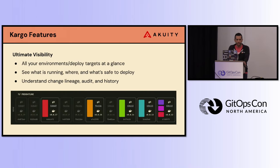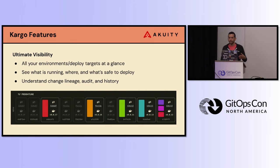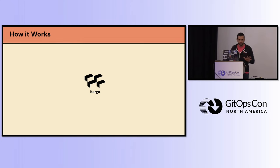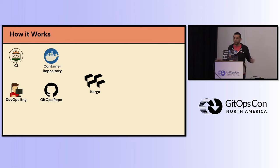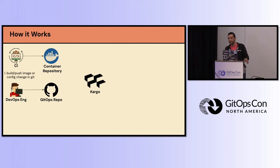Some of Kargo's features: you can view all your environments, deployment targets, and stages at a glance, see where your artifacts are in a specific stage, and understand the history or lineage of your promotion process. Kargo sits in the middle to orchestrate all of this. Some process happens — CI, a DevOps engineer, doesn't matter — either a new build or a configuration change gets pushed to Git or the container registry, and Kargo is continuously monitoring those repositories for you. It'll detect the change: 'Oh, there's a new version of a container image' or 'a new version of this configuration.'